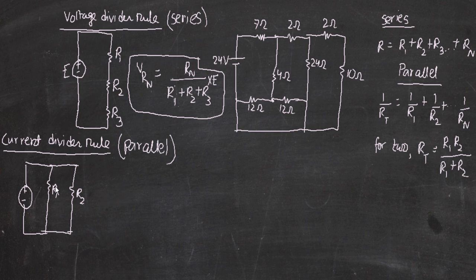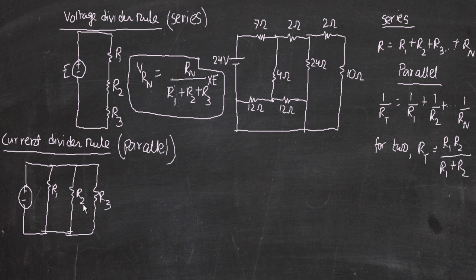The current divider rule works when there are two resistors across each other. If there's a third resistor R3, you have to convert either R1 and R2, or R2 and R3 into a combined parallel equivalent first. For example, if R2 and R3 are combined into their parallel equivalent, then you can apply the current divider rule to find the current across the remaining resistors.